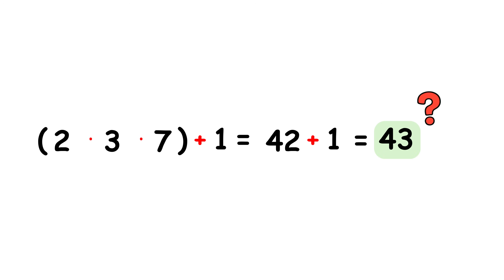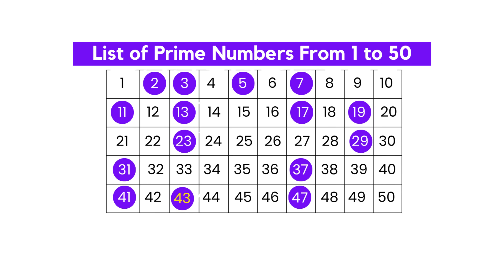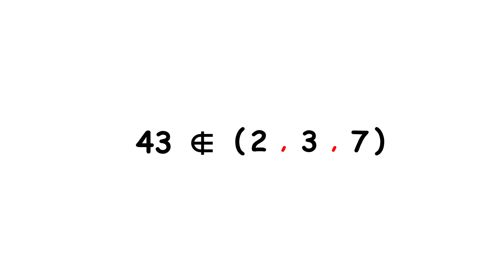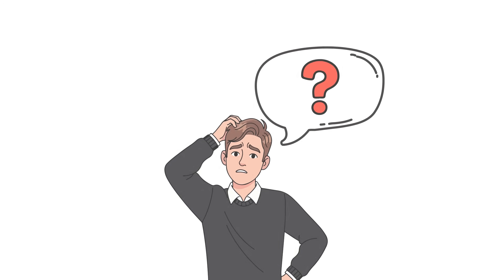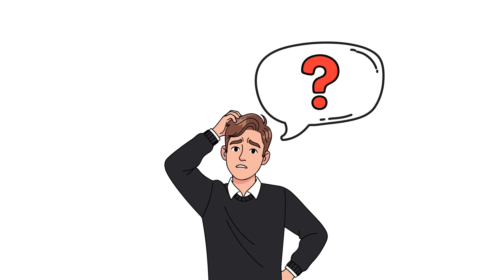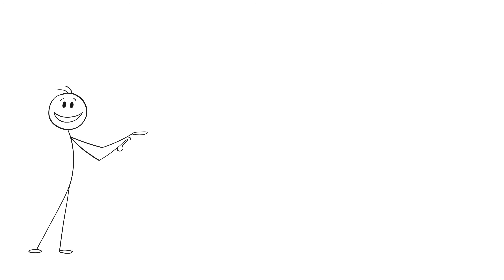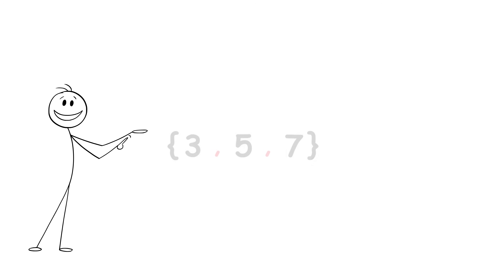We ask ourselves: is this number prime? In this case, 43 does happen to be a prime number. So, we found a prime number that's not in our set, and we are done. However, what if this isn't the case? For example, imagine starting with the numbers 3, 5, and 7 instead. The product of these numbers is 105. Then, if we add 1, we get 106.